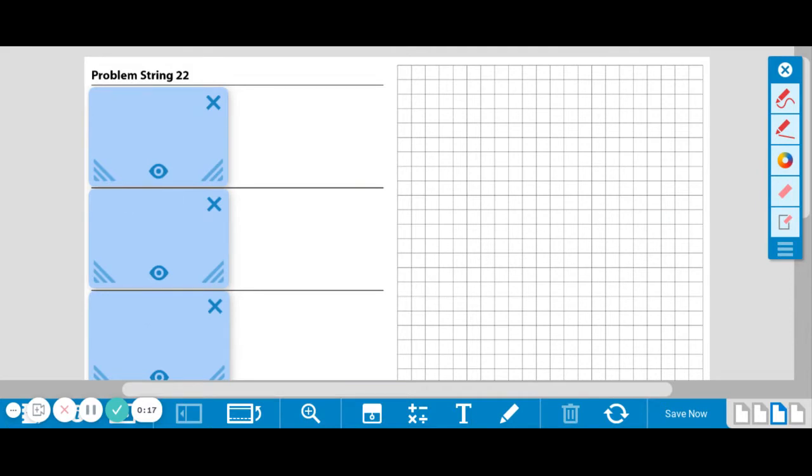Just like what we've been doing with problem strings, you'll see a problem once the blue card is flipped. If you want to solve that on your own you need to press pause. If you want to solve it with the video, just keep watching. Let's get started.